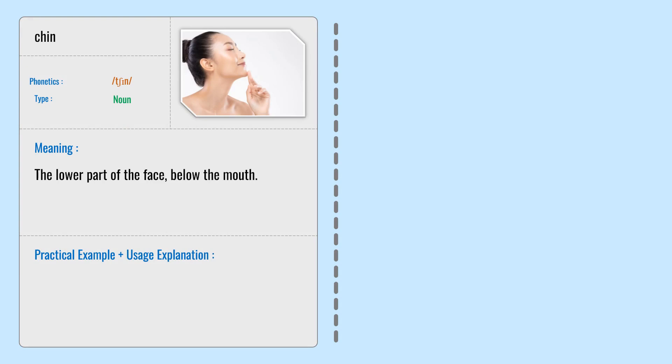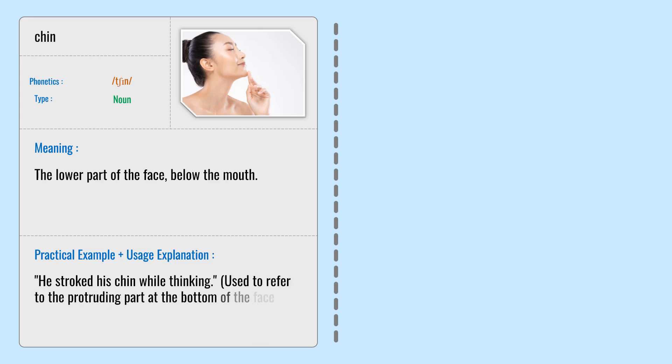Chin — the lower part of the face, below the mouth. He stroked his chin while thinking. Used to refer to the protruding part at the bottom of the face.